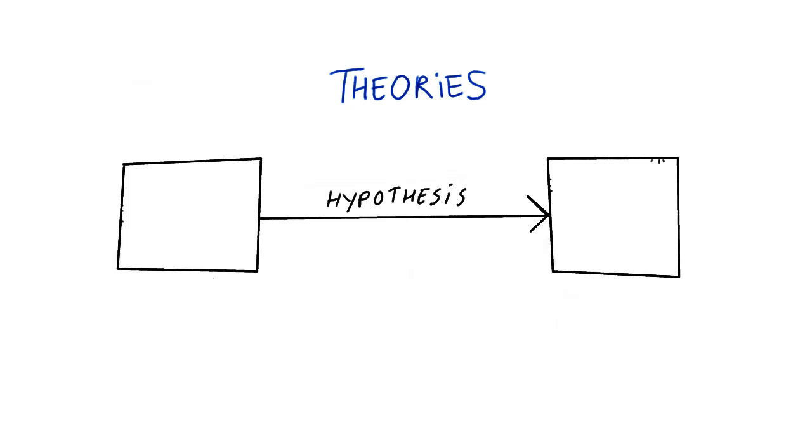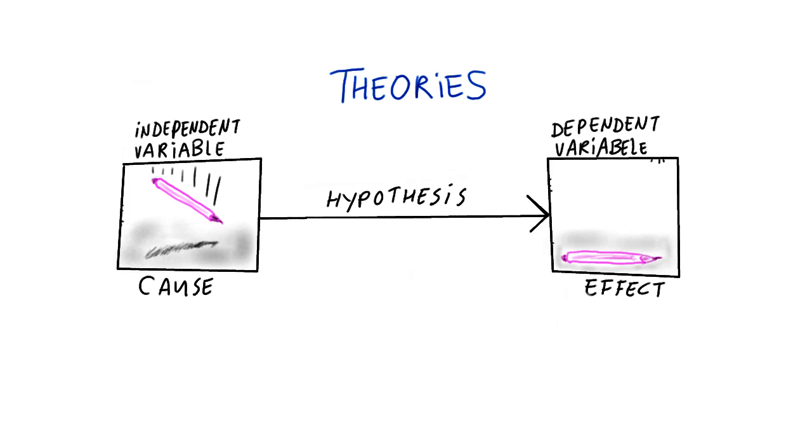The box on the left in this model represents the presumed cause, dropping the pencil. We call this the independent variable. The other is the presumed effect, or the dependent variable.